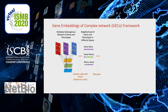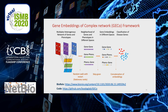Thirdly, Gecko takes the top N of those ranks and learns the latent representation of nodes using the skip-gram algorithm. Thus, Gecko generates gene embeddings of different neighborhood spaces. The learned gene embeddings of different spaces are then concatenated and used for disease gene classification using a supervised classification algorithm.